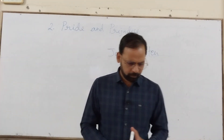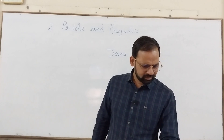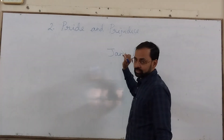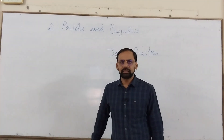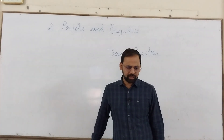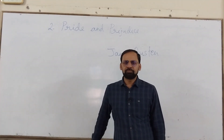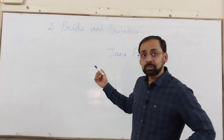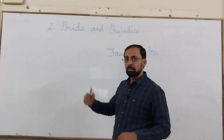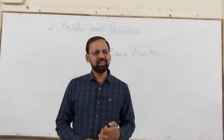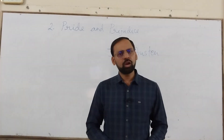Jane Austen has also written some poems and short stories, but she is famous for her novels. The most famous is Pride and Prejudice — her second novel and the most popular one she wrote. Pride and Prejudice has been adapted in different mediums so many times. So many movies have been made based on this story, and all the different TV series made are also very popular.